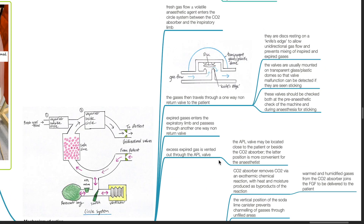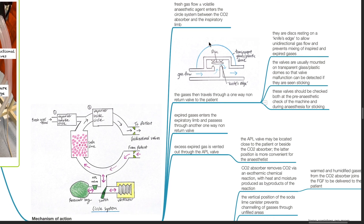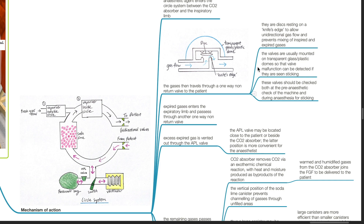Mechanism of action. Fresh gas flow, with or without volatile anesthetic agent, enters the circle system between the CO2 absorber and the inspiratory limb. The gases then travel through a one-way non-return valve to the patient. These are discs resting on a knife's edge to allow unidirectional gas flow and prevent mixing of inspired and expired gases. The valves are usually mounted on transparent glass or plastic domes so that valve malfunction can be detected if they are seen sticking. These valves should be checked at the pre-anesthetic check and during anesthesia.